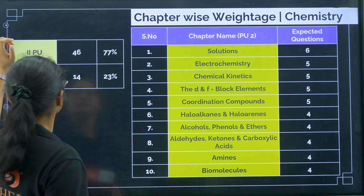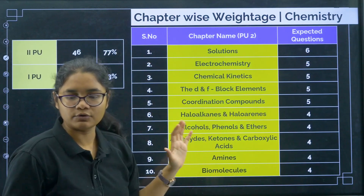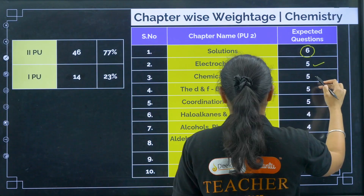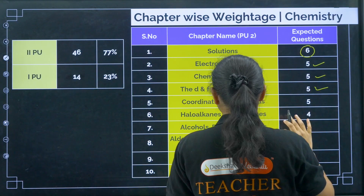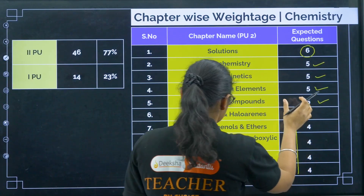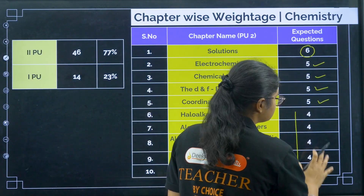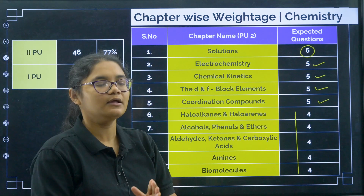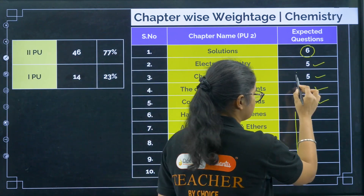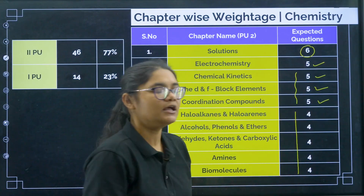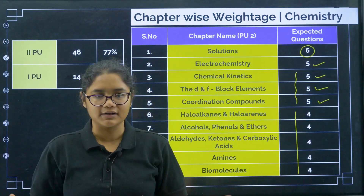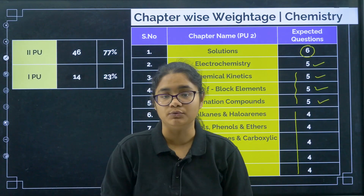Coming to the chapter-wise weightage of chemistry: you can find almost 6 questions from Solutions, Electrochemistry 5 questions, Chemical Kinetics 5 questions, D and F Block 5 questions, Coordination Compounds 4 questions, and Organic Compounds 4 questions. This is an expected number — it can vary by plus or minus 1. Roughly, you can expect 40 to 42 marks from these 10 chapters of PU2.